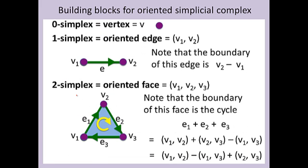Note that the boundary of the two-dimensional face is the one-dimensional cycle e1 plus e2 plus e3. The boundary of the one-dimensional edge is the difference between its zero-dimensional boundary vertices, v2 minus v1. A zero-dimensional vertex does not have a boundary, so boundary of v is zero.